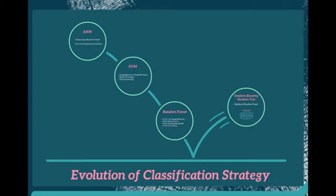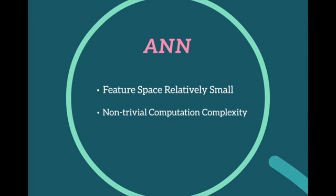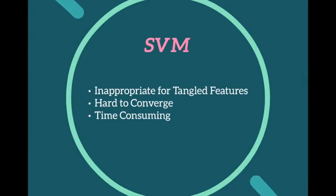Here comes our evaluation of classification strategies. The first strategy we considered was an artificial neural network. We ultimately did not choose it as our final approach because our dataset is relatively small, meaning the feature space is small and cannot support training a multi-class classifier with many categories. It also requires very strong computational capability, which our lab could not satisfy.